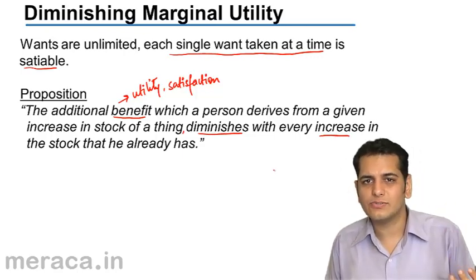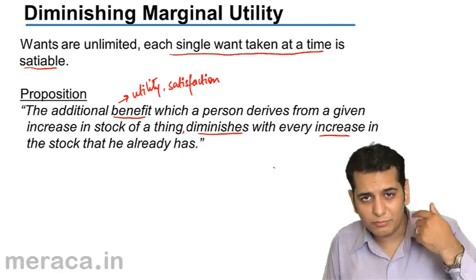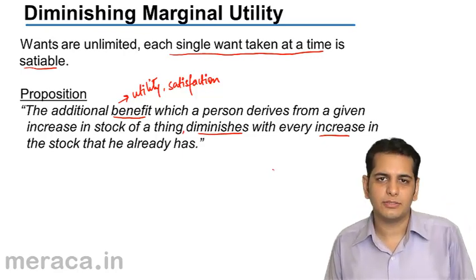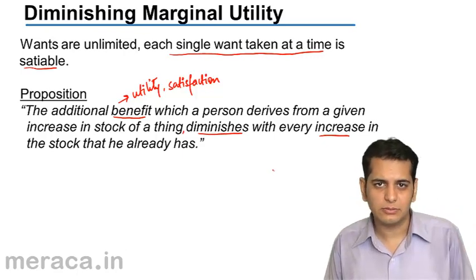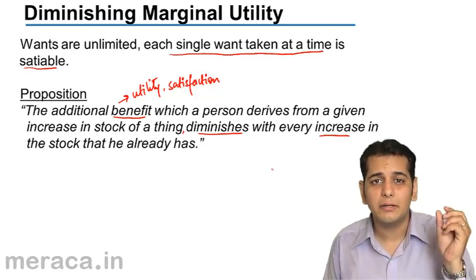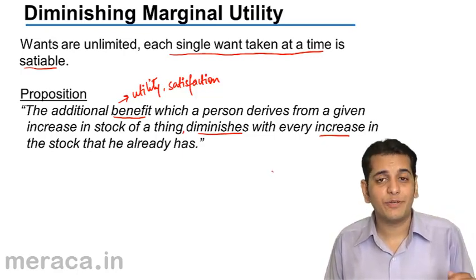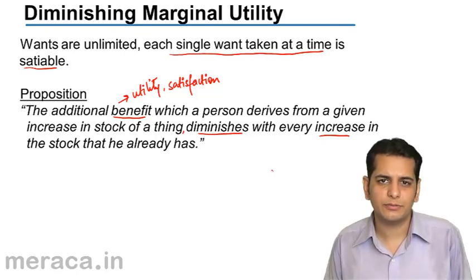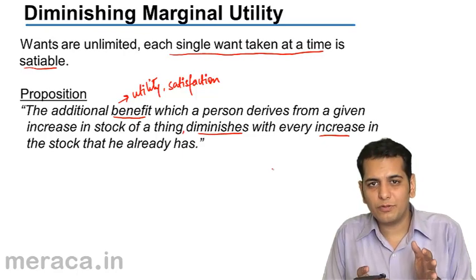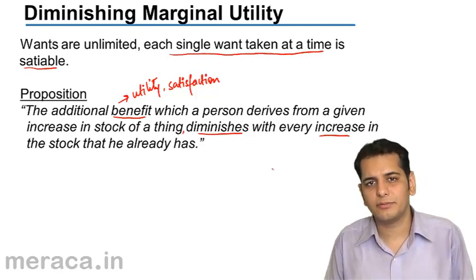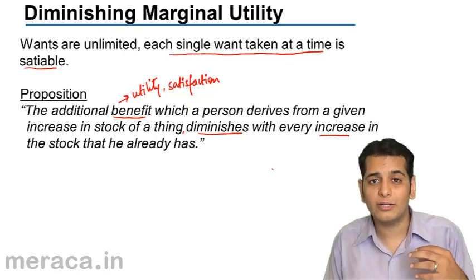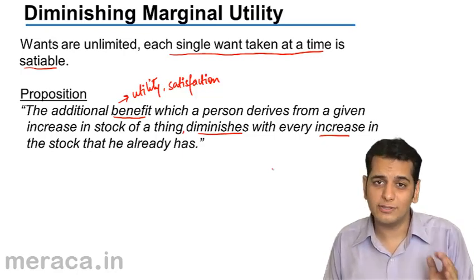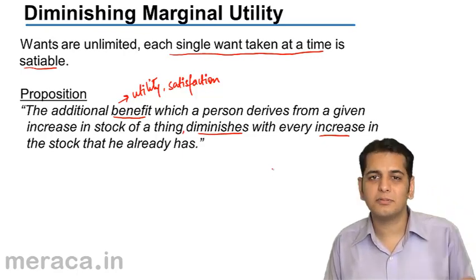As you go on increasing the consumption, the satisfaction level that you derive from the next unit of consumption goes on diminishing. Let's say you are having ice creams. The first ice cream will give you the maximum amount of satisfaction. When you have the second ice cream, you will derive lesser satisfaction, because when you consumed the first ice cream, you had a desire to have it. So with the first ice cream, that want is satisfied and you derive the maximum level of satisfaction.